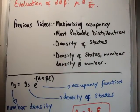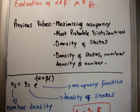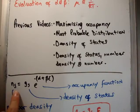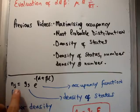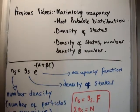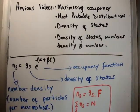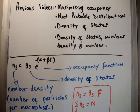In the most previous video, number 28, I showed you — we calculated the most probable distribution, or we maximized the occupancy function. We got n_s equal to g_s times e to the minus alpha plus beta epsilon, where epsilon is the energy. We said that n_s is the number density or the number of particles per macro box. We said g_s was the density of states, and that e to the minus alpha plus beta epsilon is the occupancy function — the Maxwell-Boltzmann occupancy function, because we're dealing with classical particles.